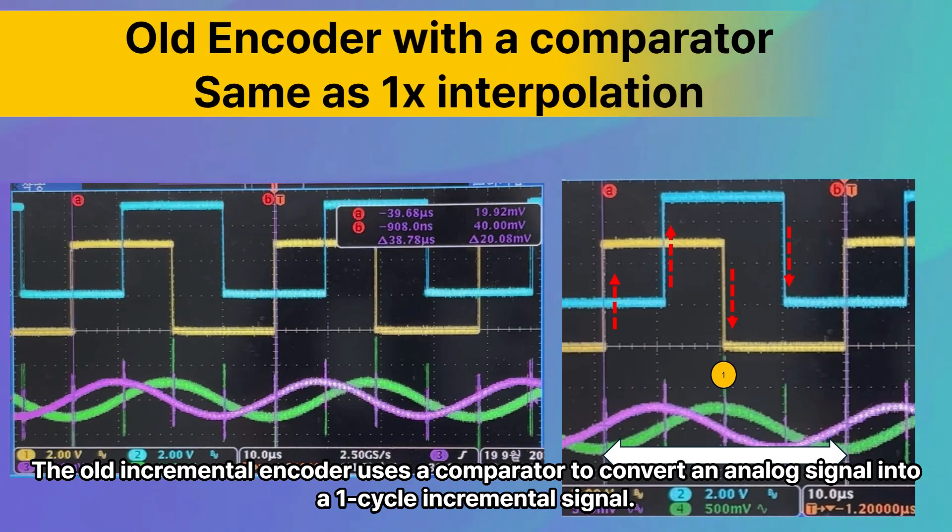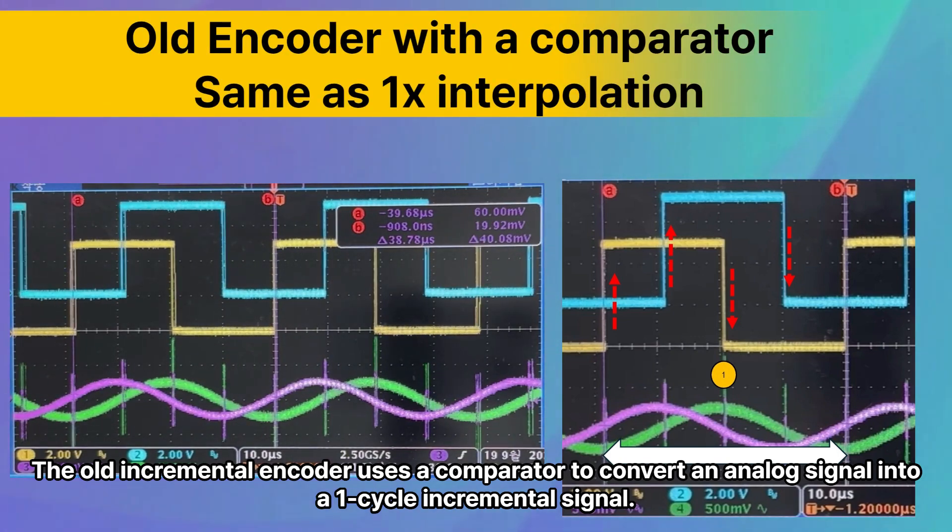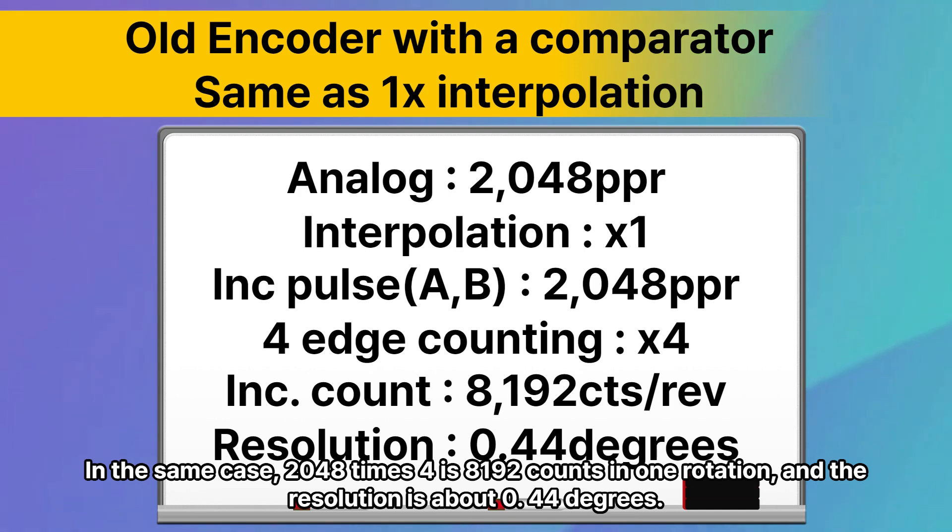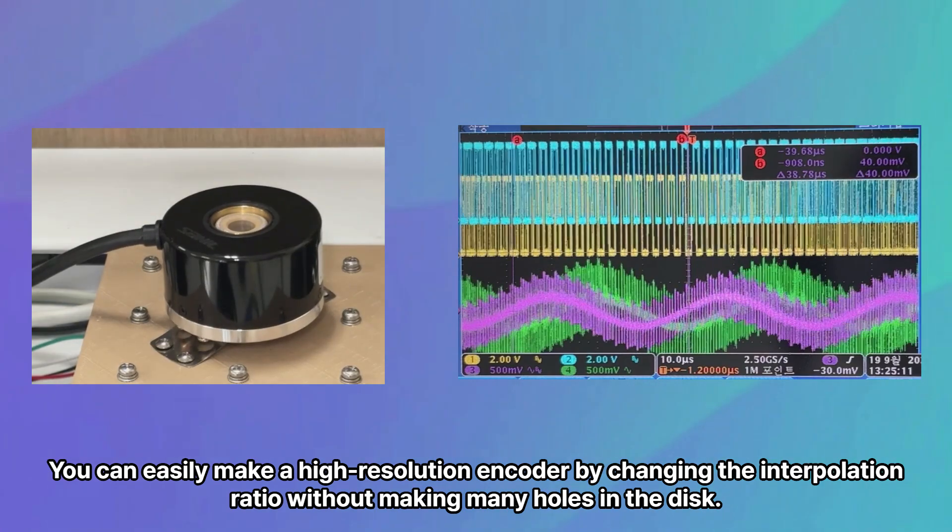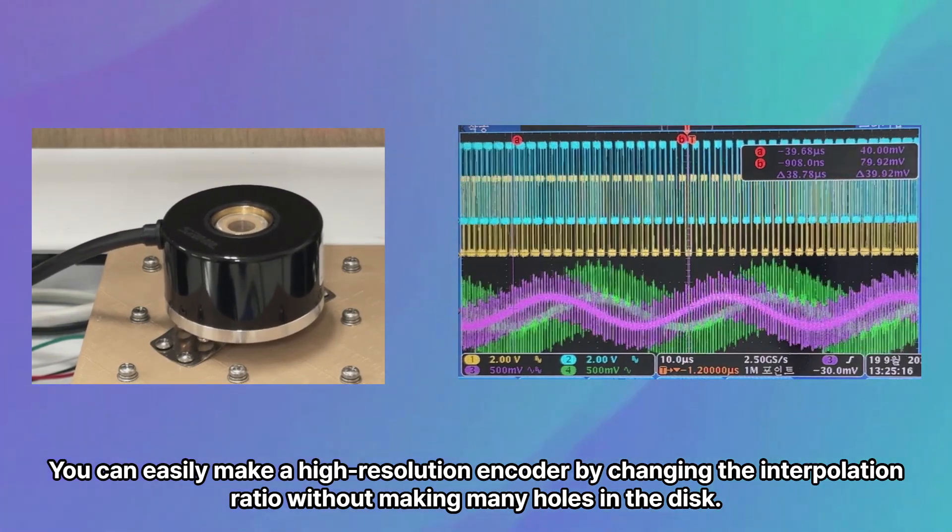The old incremental encoder uses a comparator to convert an analog signal into a one-cycle incremental signal. In the same case, 2048 times four is 8,192 counts in one rotation, and the resolution is about 0.44 degrees. You can easily make a high-resolution encoder by changing the interpolation ratio without making many holes in the disk.